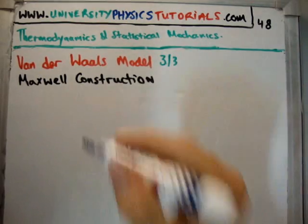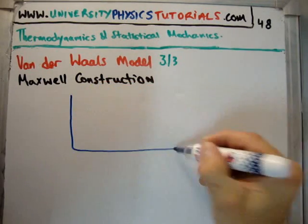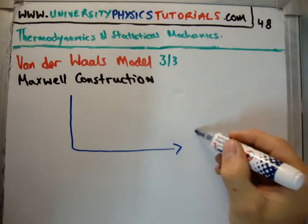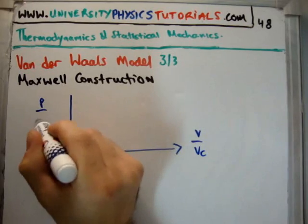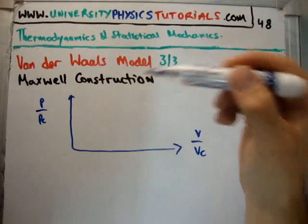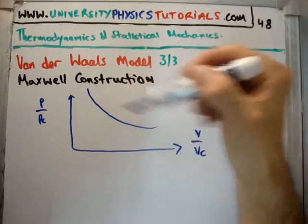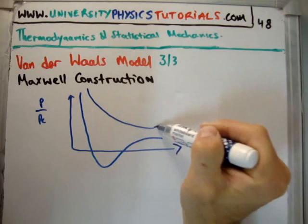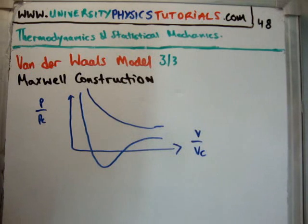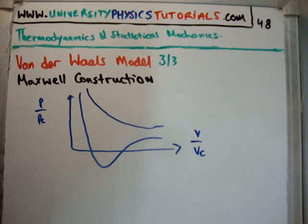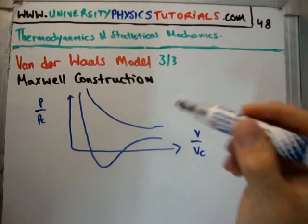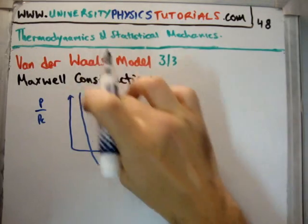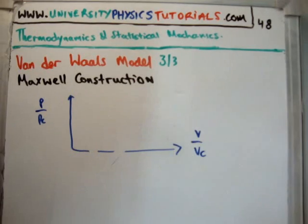So, we saw in video number 46 that if we plot on a PV diagram with V over V critical and P over P critical for the Van der Waals model, we get something that looks like this. I'm just going to draw it to two extremes, with the bottom one there being the archetypal Van der Waals PV diagram.